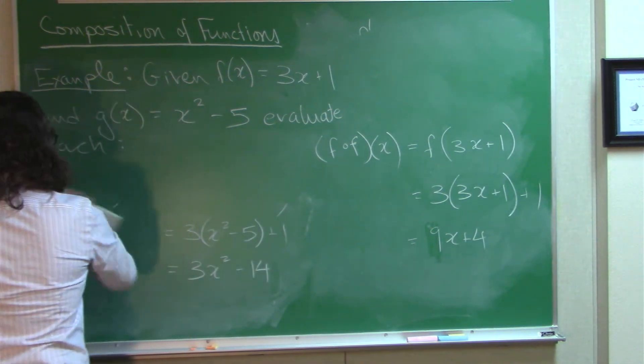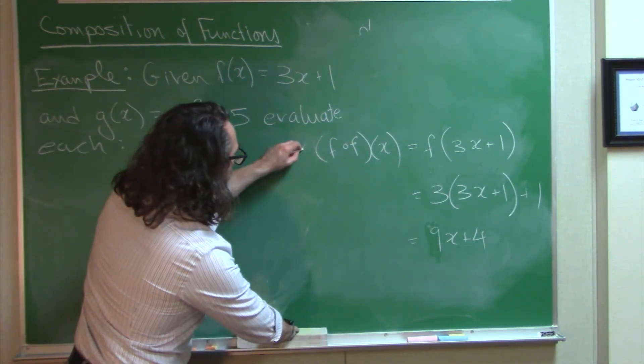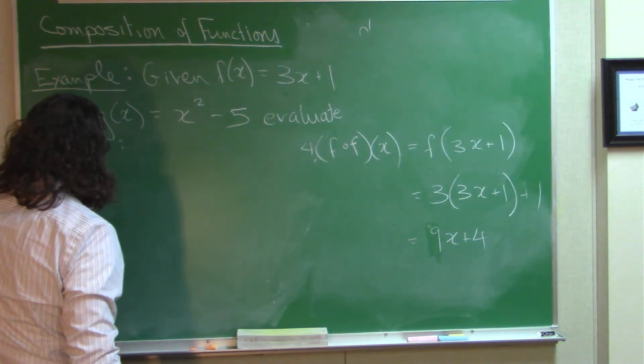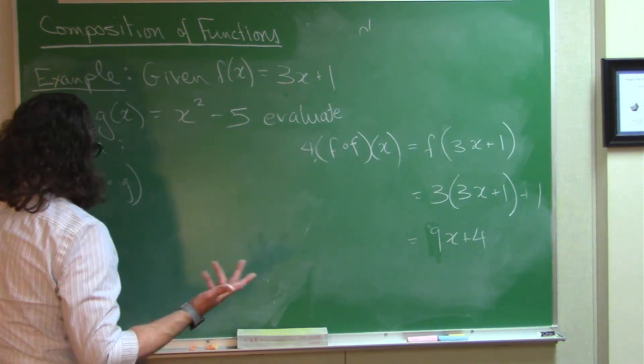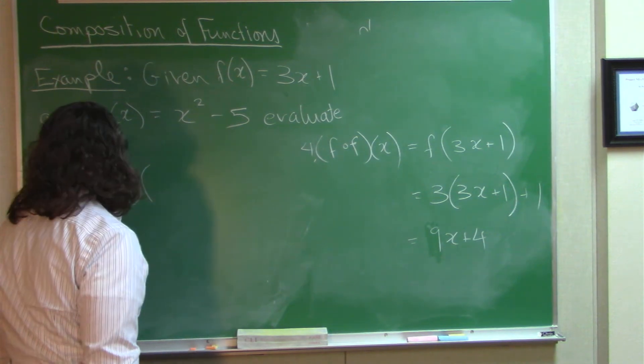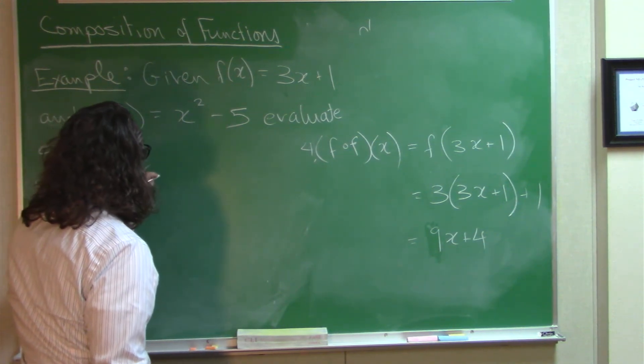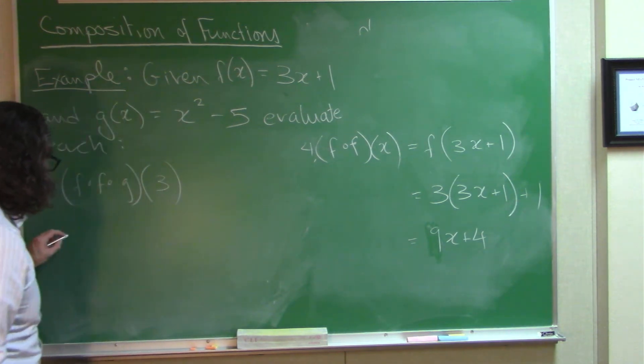And you could even do that was the fourth example. You could even do something like this. F of F of G. Let's throw in some other things here. F of F of G of 3. Okay, well, first thing to do, figure out G of 3. Easy enough. 3 squared is 9, minus 5 is 4.